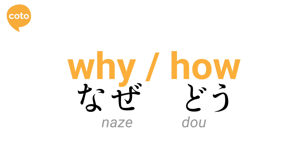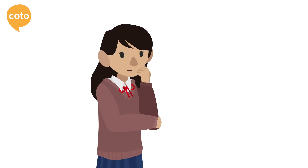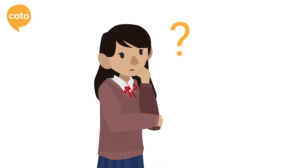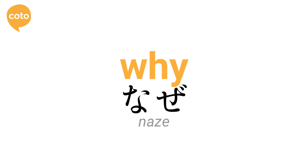Lastly, let's take a look at expressing 'why' and 'how.' In the Japanese language, there are some words with overlapping meanings where some can mean both 'why' and 'how' at the same time. The first word, 'naze,' can be used in various contexts to refer to 'why' or 'how.'